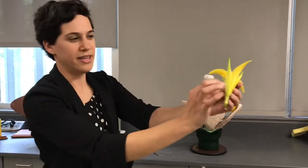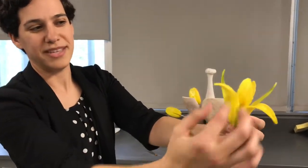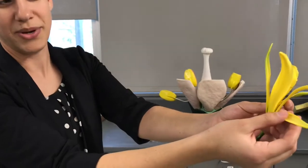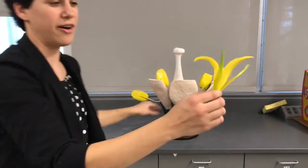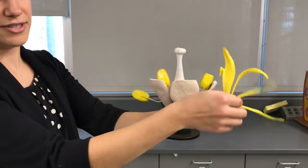So on this lily, these three outer pieces we would call the sepals, and I'm actually going to pull each one off so we can see what's inside of this flower.